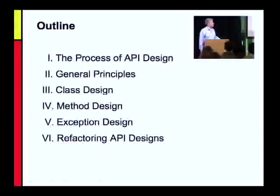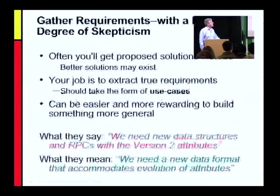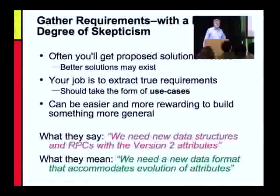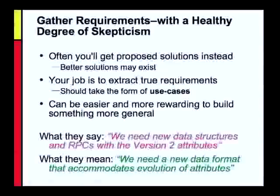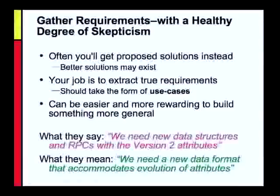So what is the process of API design like? First, you've got to gather the requirements, but do it with a healthy dose of skepticism. Often when you ask people what an API has to do for you, what you get won't be a real set of requirements — it'll be a set of proposed solutions. For example, if someone says 'we need to precisely control garbage collection intervals and the maximum time each collection can take,' that's not really a requirement. The requirement is: we need to run a server smoothly while garbage collection takes place. How you achieve that is up to you.